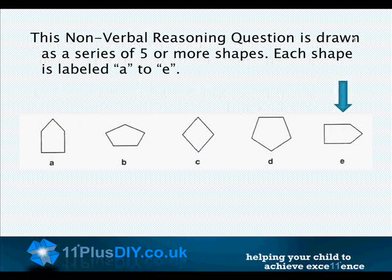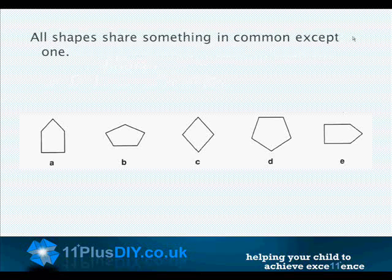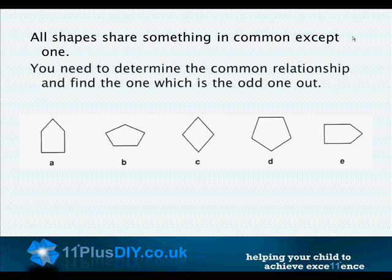This nonverbal reasoning question is drawn as a series of five or more shapes. Each shape is labelled with the letter A to E. All of the shapes share something in common except one. You need to determine the common relationship and find the one which is the odd one out.